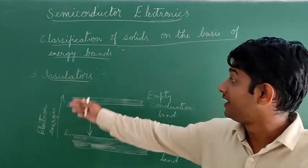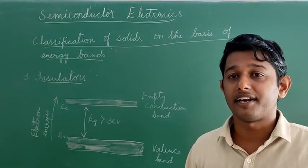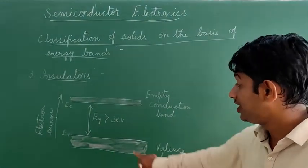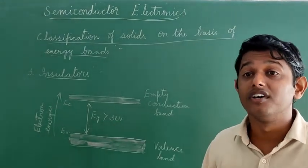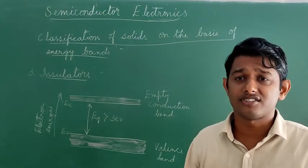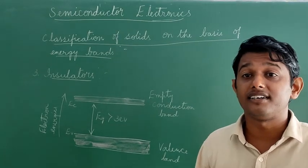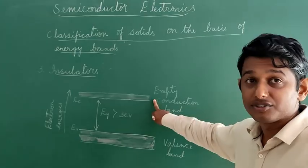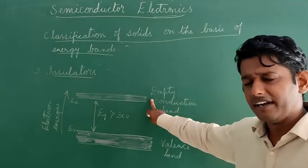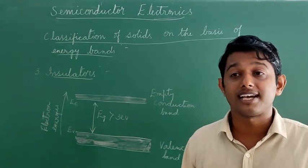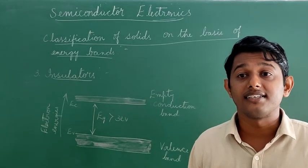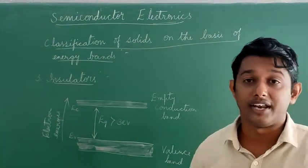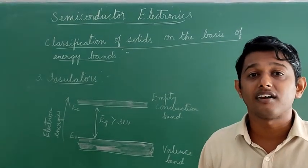In insulators, the valence band and conduction band are separated by a large energy gap greater than 3 electron volts. The energy gap is so large that electrons cannot be excited from the valence band to the conduction band by thermal excitation. Therefore, the conduction band is completely empty and no electrical conduction is possible at room temperature. Examples of insulators are plastic, wood, glass, etc.